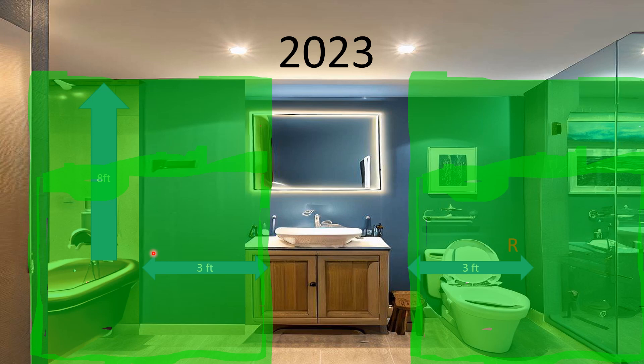Exception one: receptacles installed in accordance with 680.23 shall be permitted — we won't get into that today. Exception two is for small bathrooms. Exception three is new — weight-supporting ceiling receptacles. These new lights that are like receptacles where you just plug the light in with a male and female adapter — those are an exception as long as they meet all parameters. Exception four is very interesting: in a dwelling unit, a single receptacle shall be permitted for an electronic toilet or personal hygiene device such as a bidet. That receptacle shall be readily accessible and not located in the space between the toilet and the tub or shower. So for a bidet, you can be in the three-foot zone, but based on my reading you'd place it on the side away from the tub — work with your electrical inspector on that.